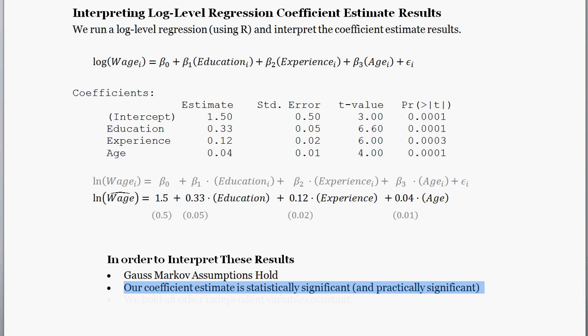Next up, we need to assume that our coefficients are statistically significant and practically significant. Regarding statistically significant, how do we know that? Well, we look at our t-value and p-values here. We have super low p-values for each of our regression coefficient estimates, so we know that they're statistically significant.